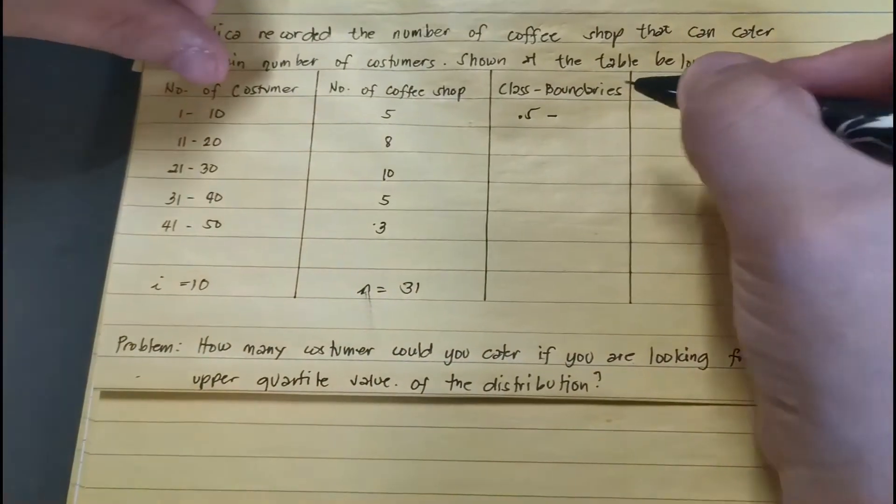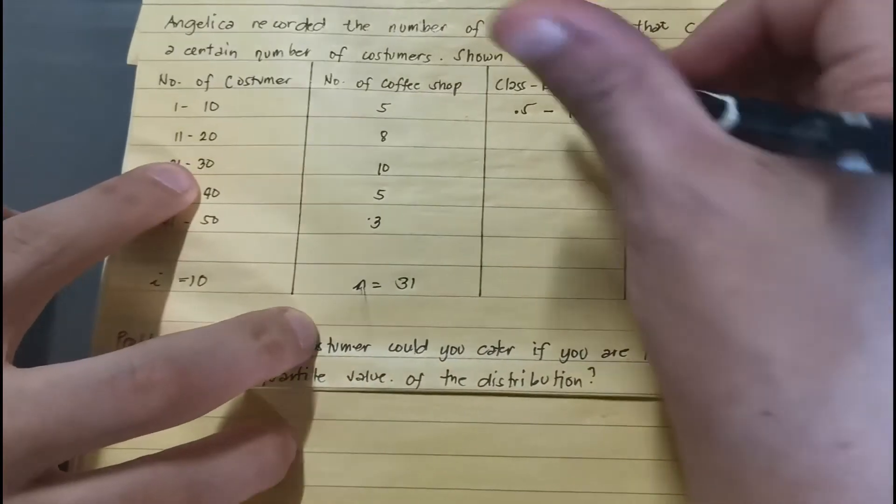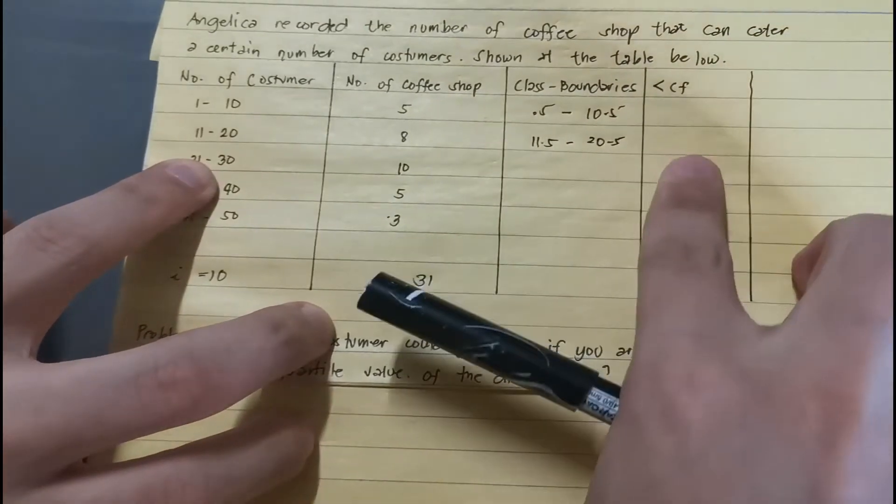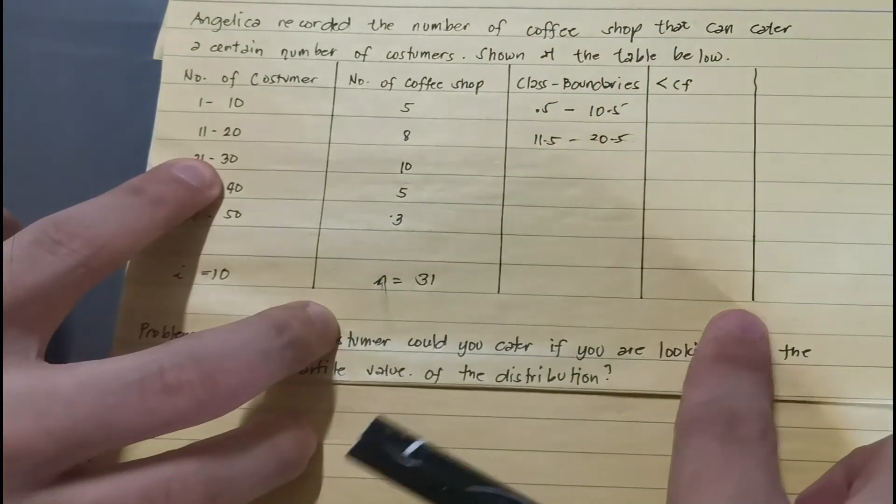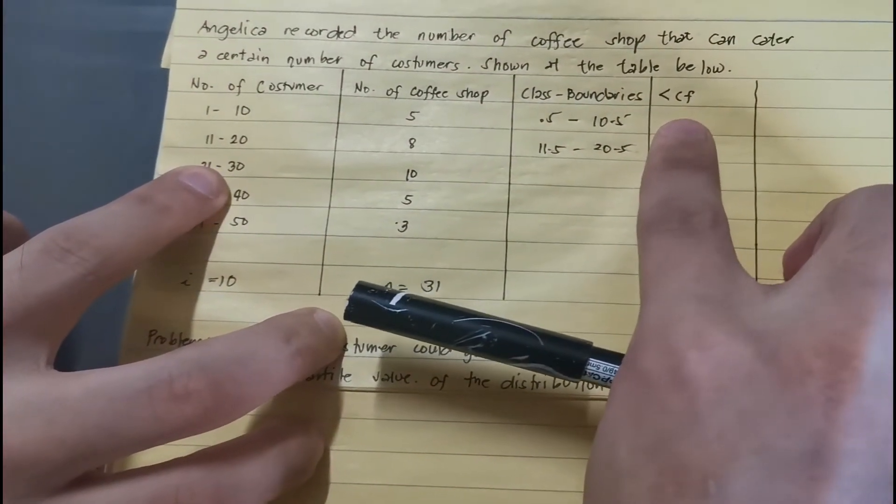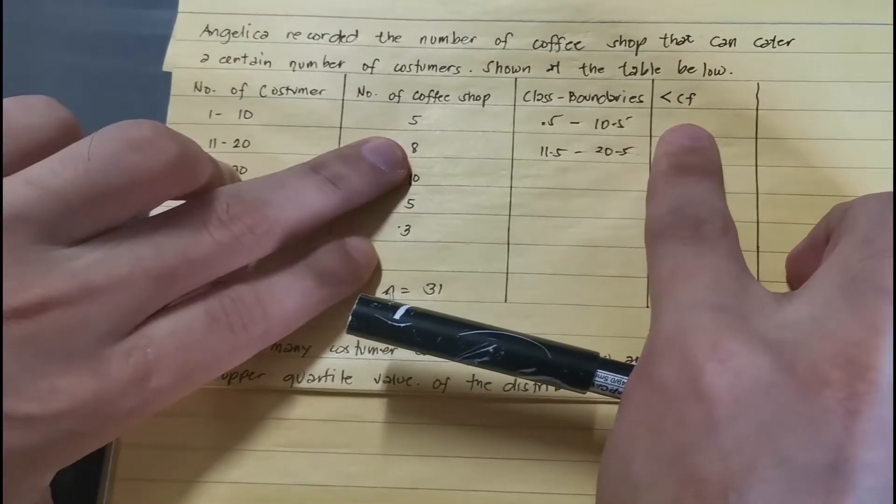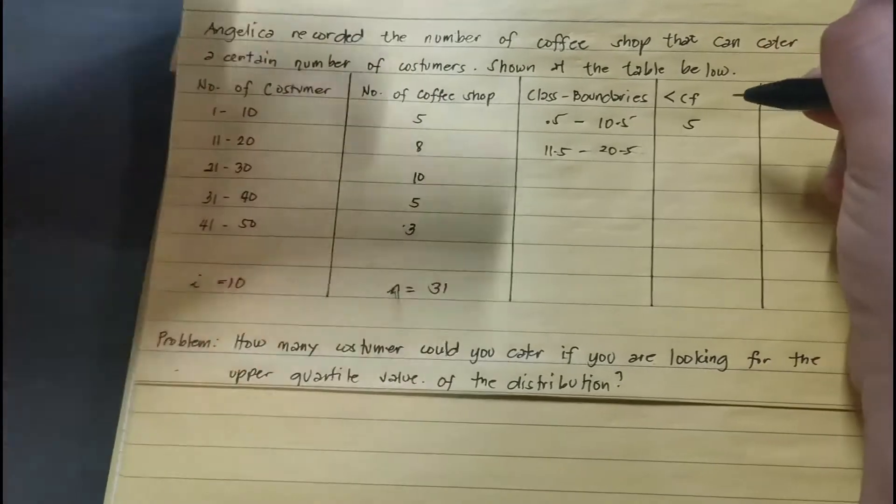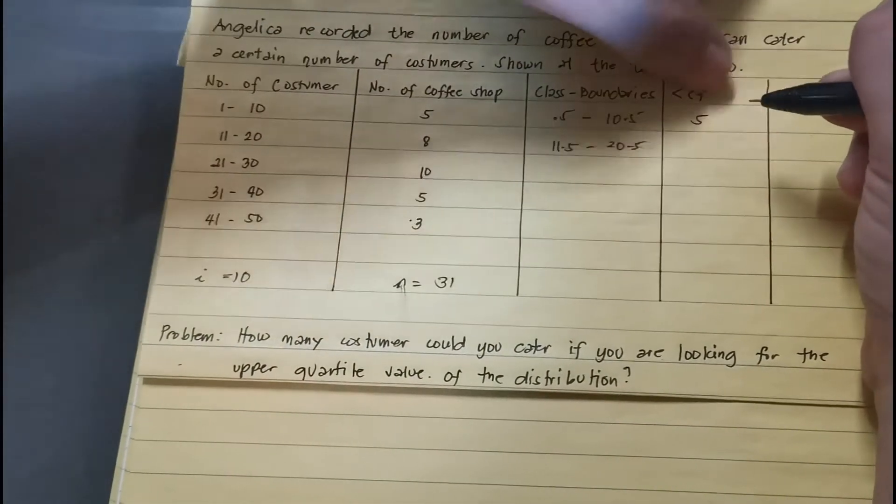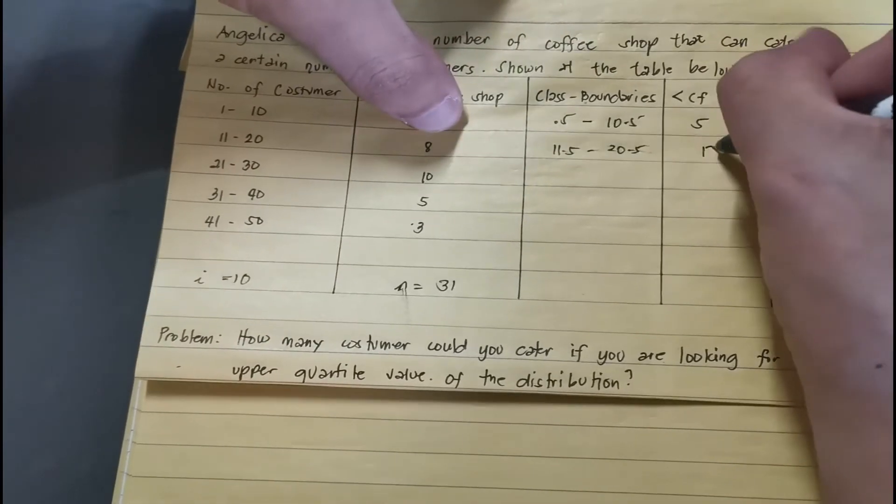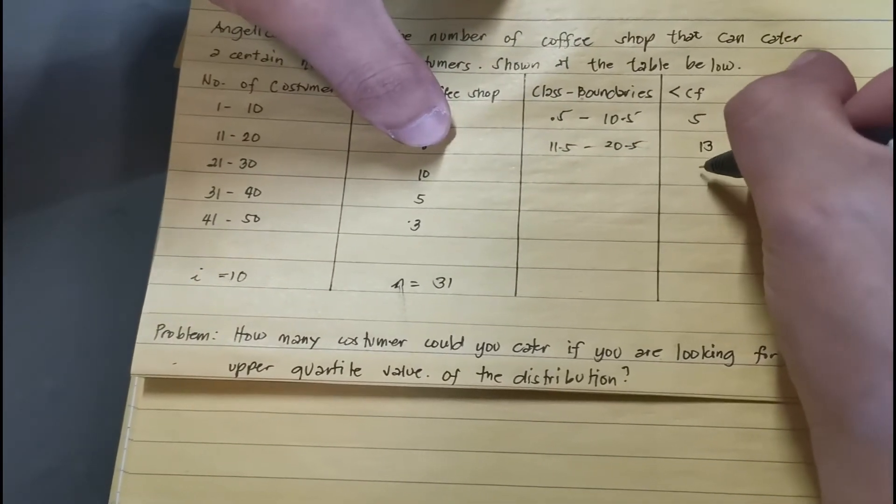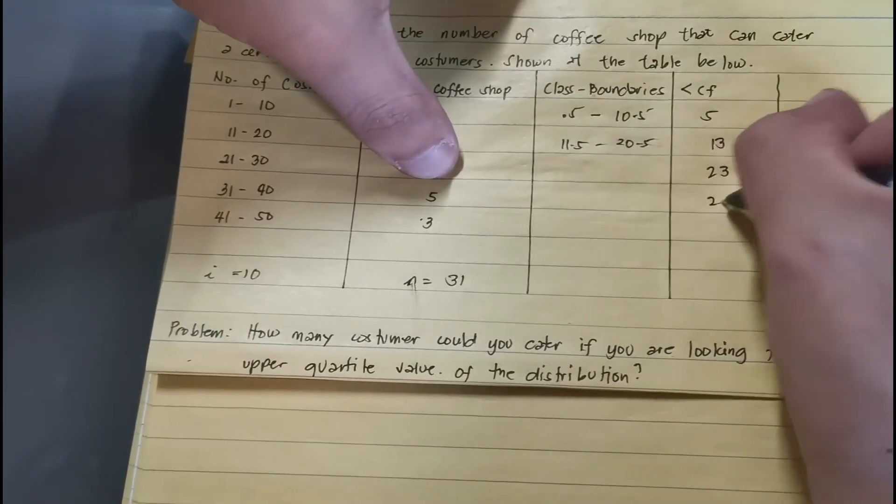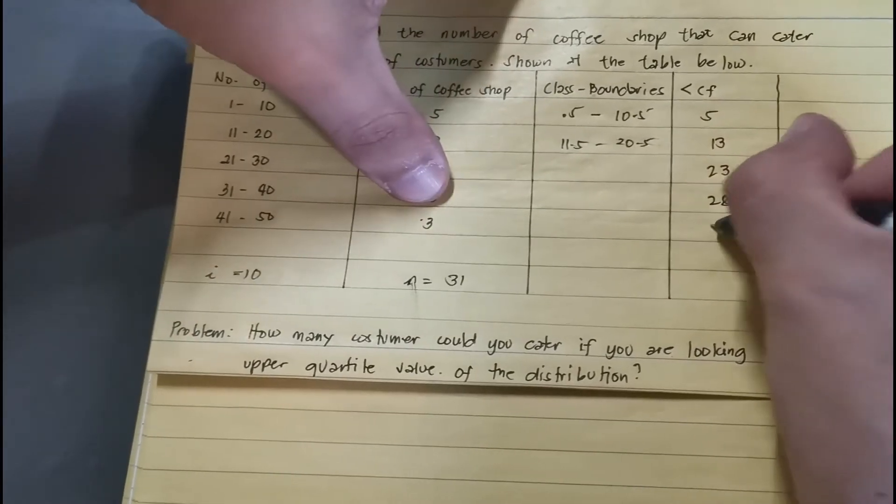So we have 1 minus 0.5, that is 0.5, and then 10 plus 0.5, that is 10.5. The same thing with here, that means to say 11.5 to 20.5. And then for this part here, we have the less than cumulative frequency, that is just simply the cumulative frequency of our given frequencies here. So you have 5, the circuit 5, and then to get the next one, that's 5 plus the next frequency 8, we have 13. And then you have plus 10, you have 23, plus 5, that is 28, plus 3, you have 31.